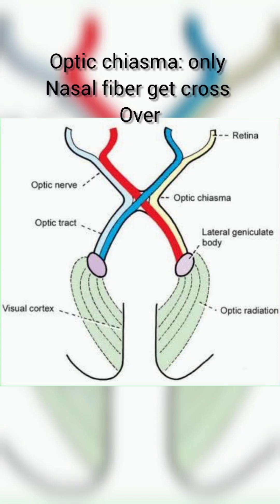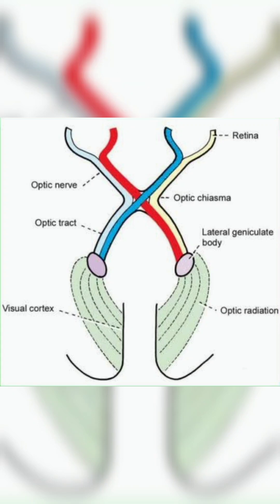The third is the optic chiasma, where the nasal fibers and temporal fibers undergo partial crossover. The fourth one is the optic tract, which gives off lateral and medial roots. The lateral root is thick and terminates in the lateral geniculate body, which receives the lateral root and is arranged in six layers for receiving ipsilateral and contralateral fibers.